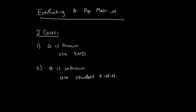If you're estimating a population mean or determining a confidence interval for a population mean, you have to consider whether or not sigma is known. If it is known, we use one method; if sigma is unknown, we use another. So it's very important to determine which scenario it is.